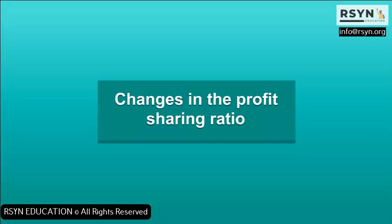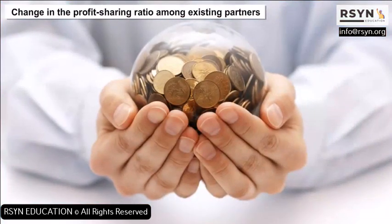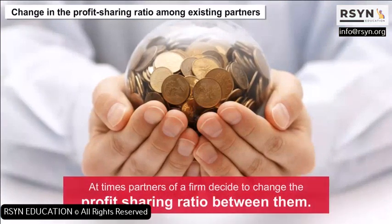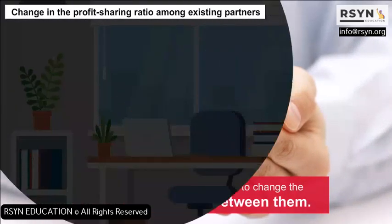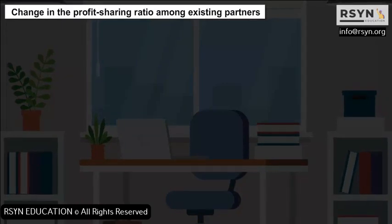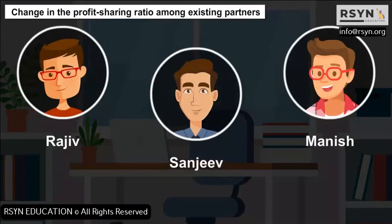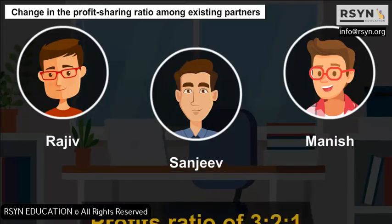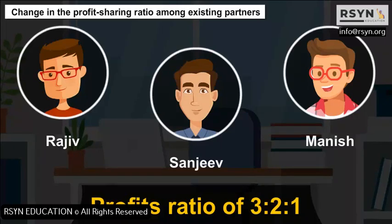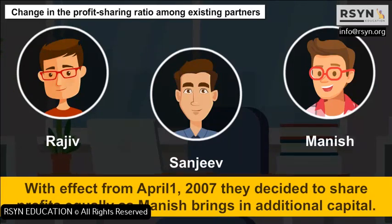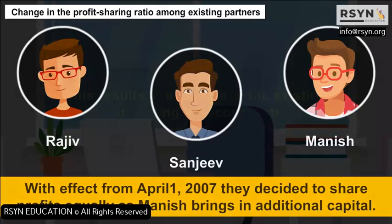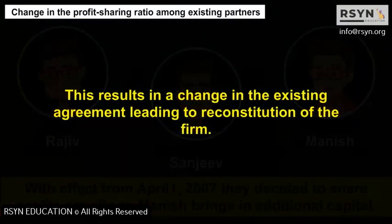Change in the Profit Sharing Ratio: At times, partners of a firm decide to change the profit sharing ratio between them. For example, Rajiv, Sanjeev and Manish are partners sharing profits in the ratio of 3:2:1. With effect from April 1, 2007, they decide to share profits equally as Manish brings in additional capital. This results in a change in the existing agreement, leading to reconstitution of the firm.